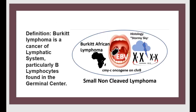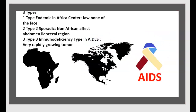What is Burkitt lymphoma? Burkitt lymphoma is a cancer of the lymphatic system, particularly B lymphocytes found in the germinal center.